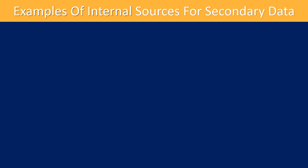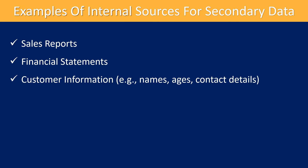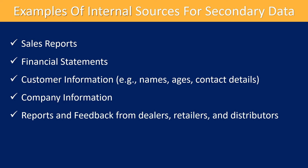Some examples of internal sources for secondary data include sales reports, financial statements, customer information such as names, ages, and contact details, company information, reports and feedback from dealers, retailers, and distributors, as well as management information systems.